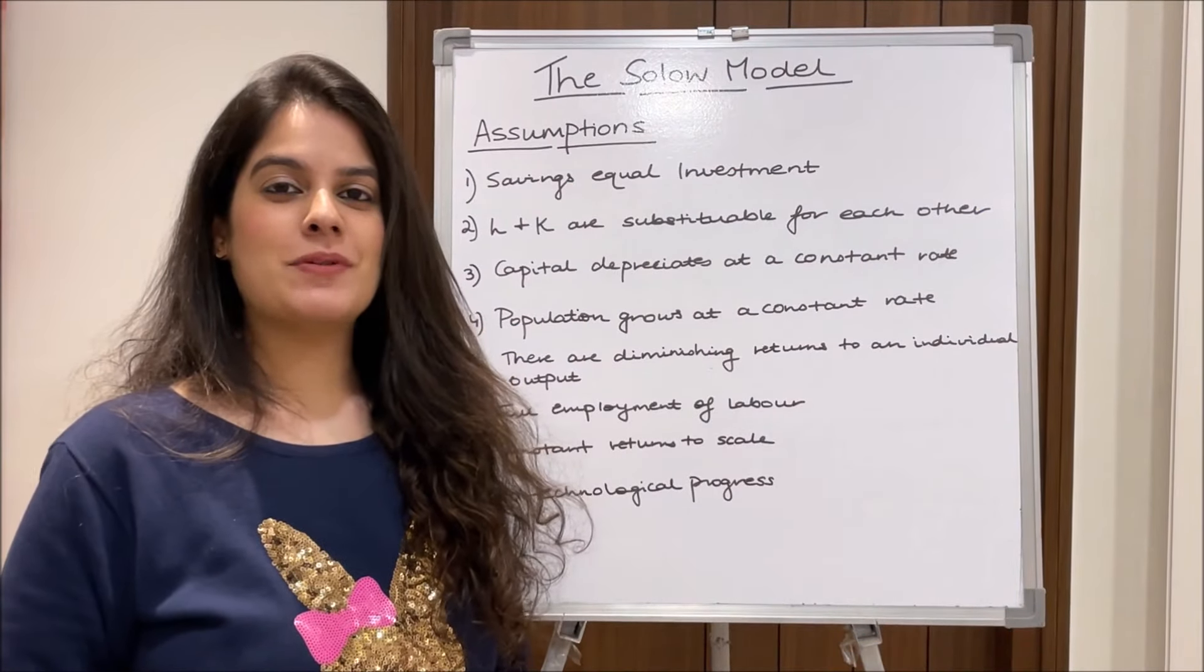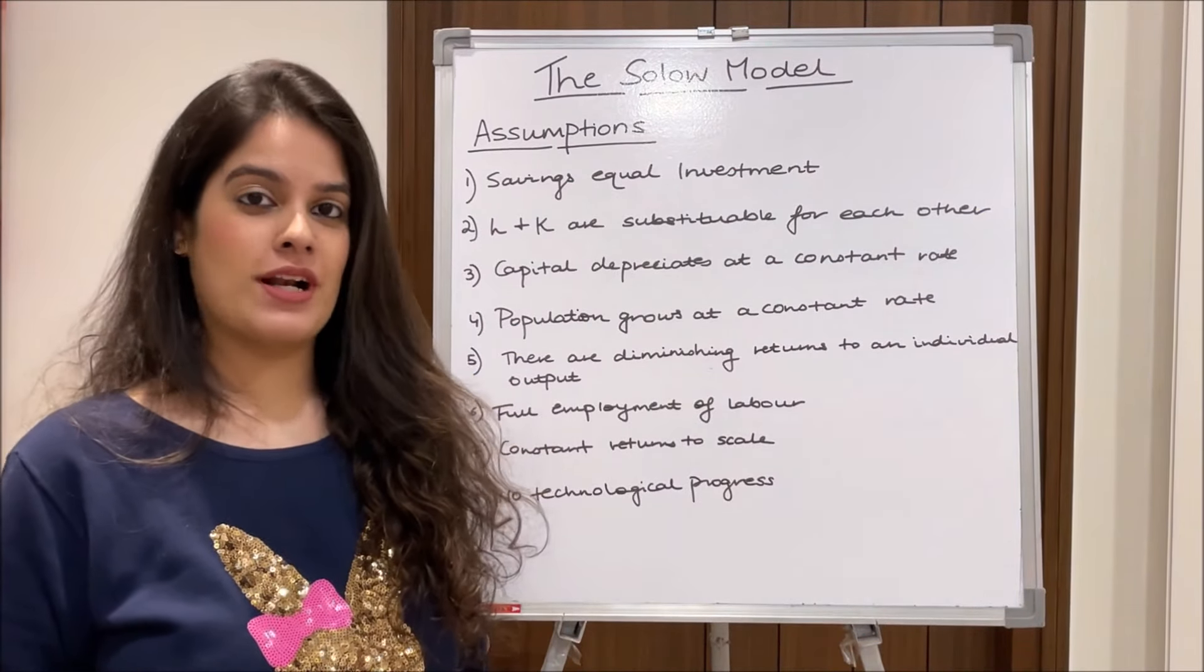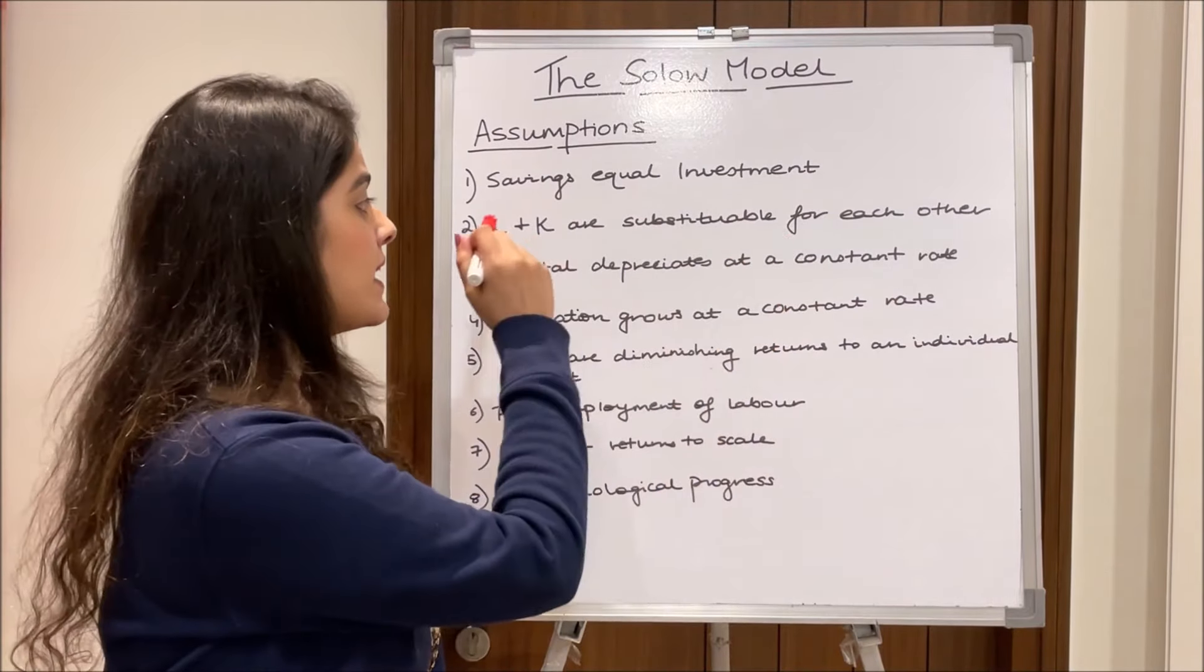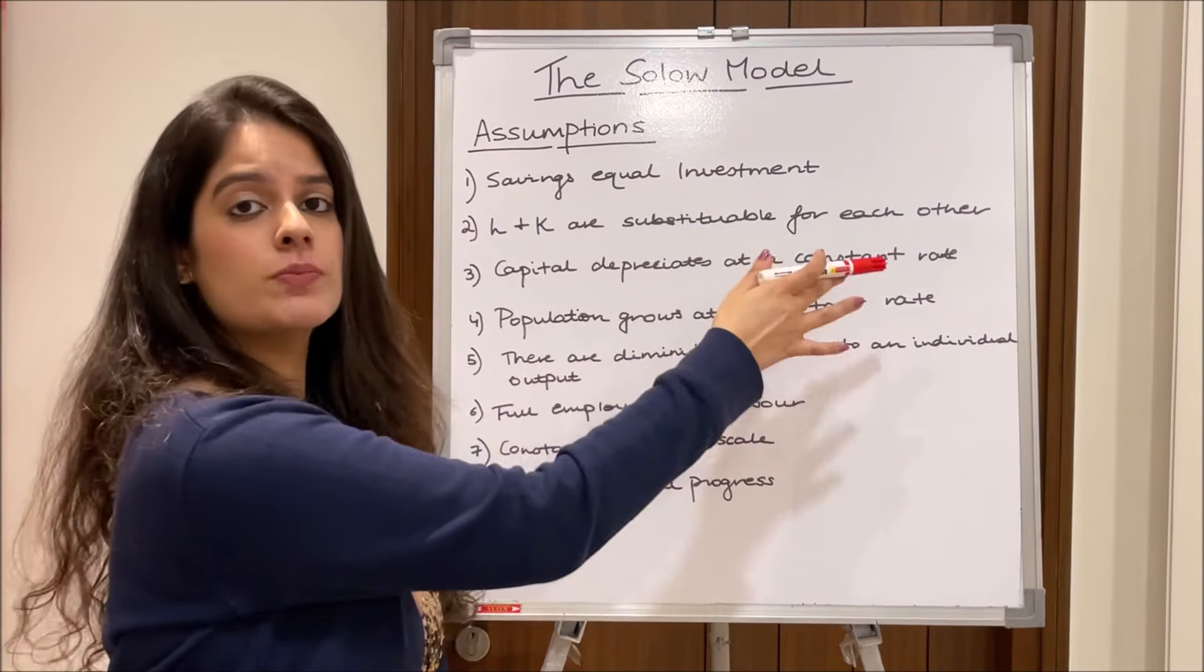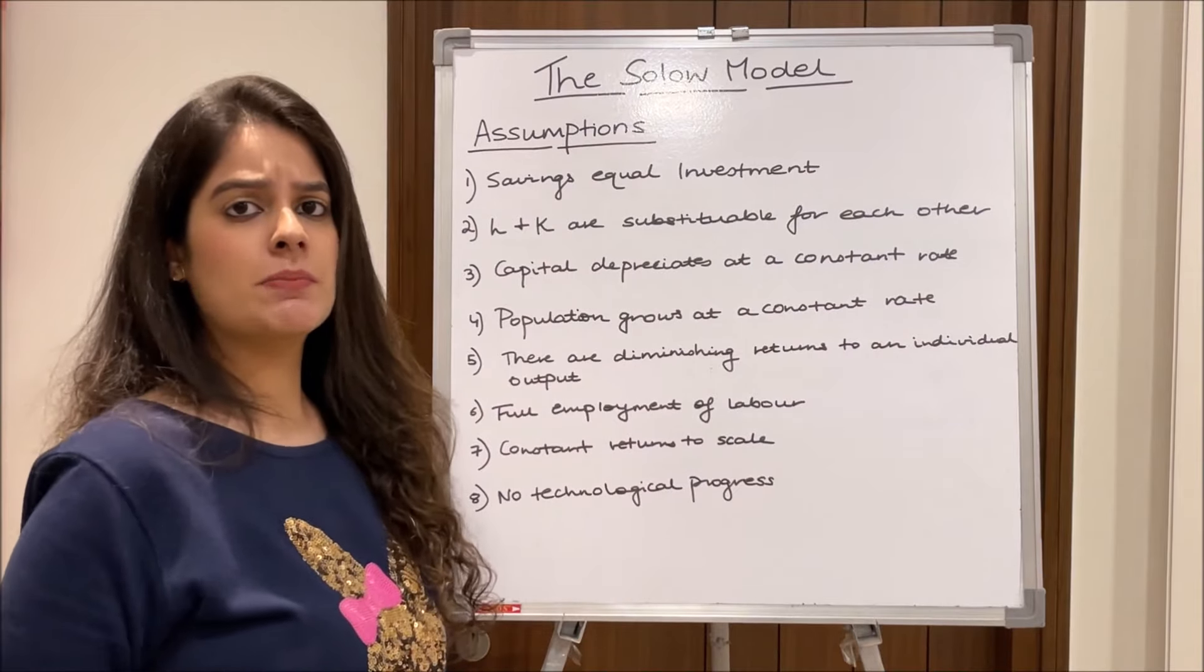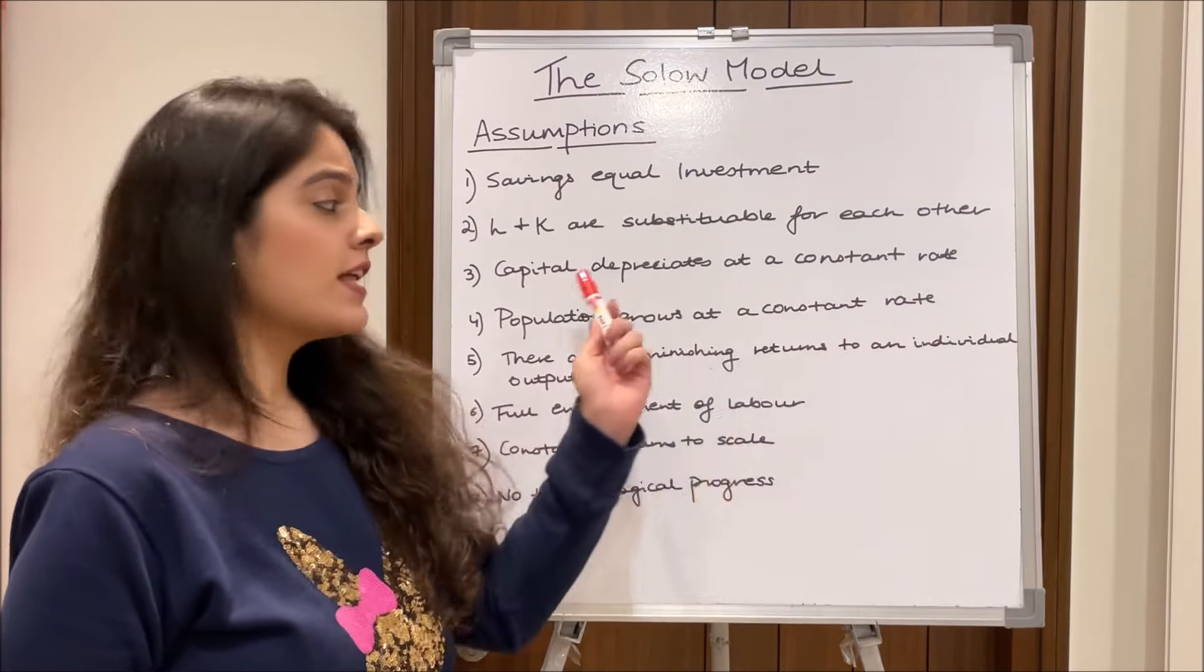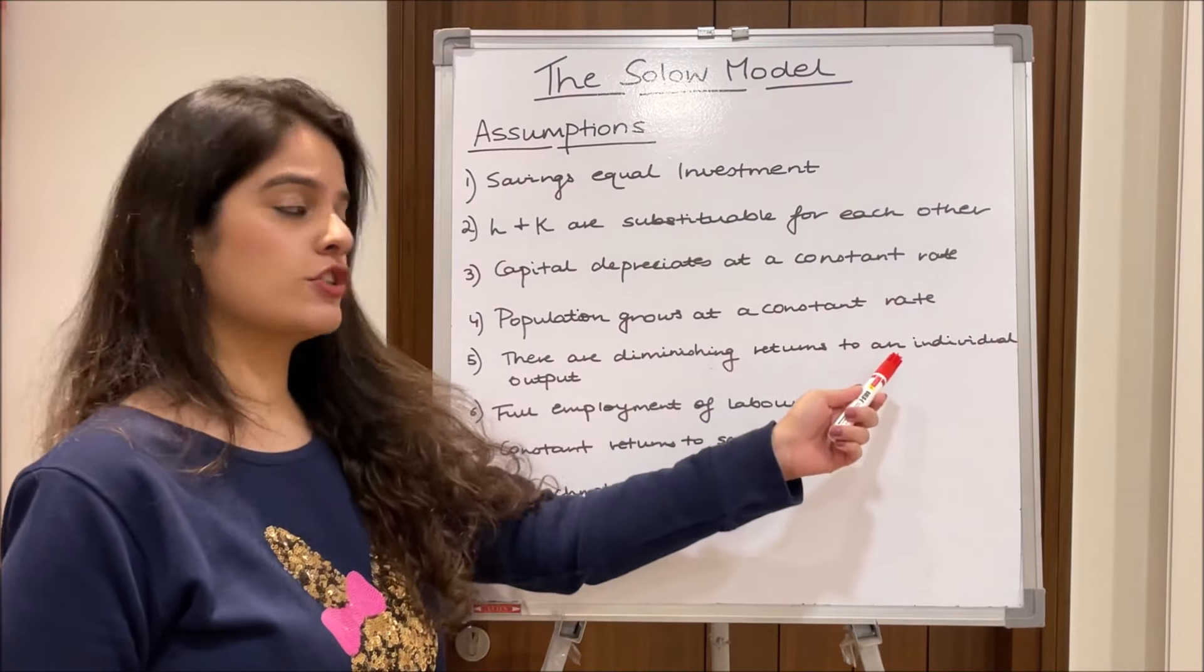So moving ahead I'll be discussing a few assumptions of the model. Number one being that the savings equal investment. The labor and capital are substitutable for each other, that is they can be used in place of each other. The capital depreciates at a constant rate. The population grows at a constant rate.